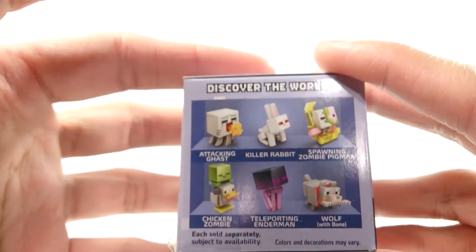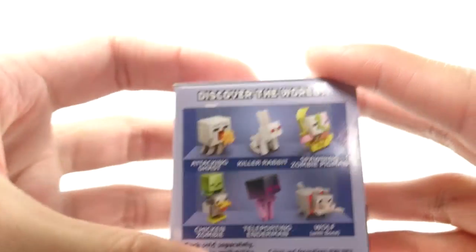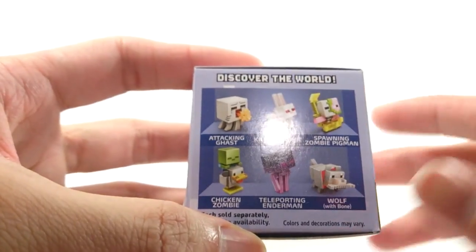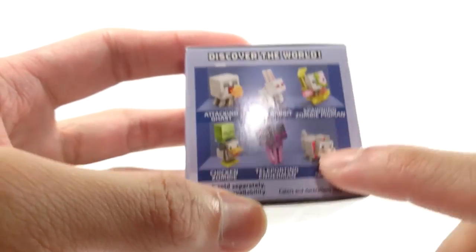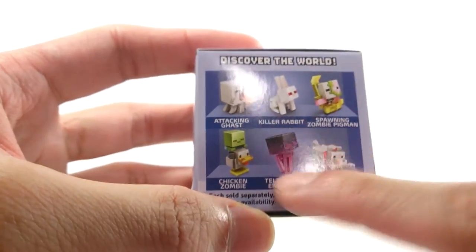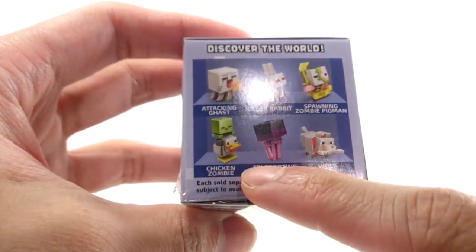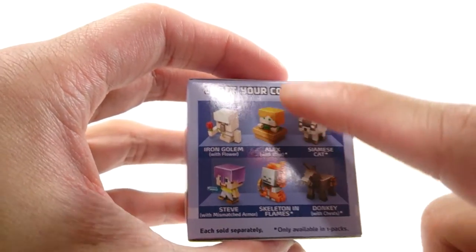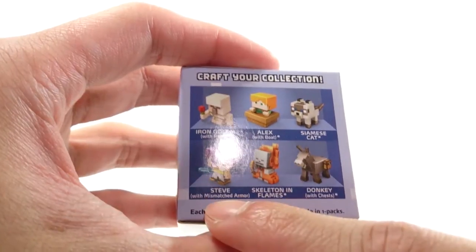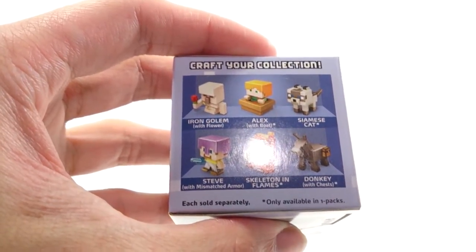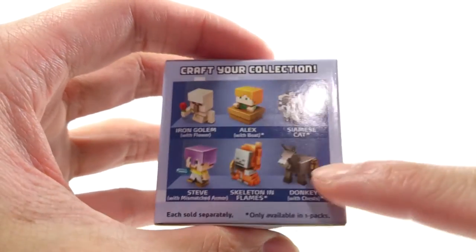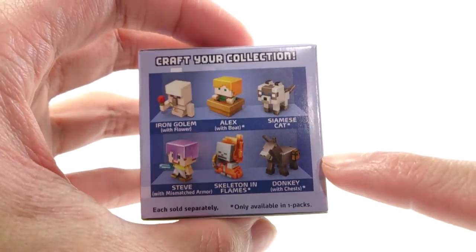They have an attacking Ghast, that's cool. Killer Rabbit, Spawning Zombie Pigman, didn't know about that. The most I've played of Minecraft is Minecraft Story Mode, so go figure. A Wolf with a Bone, Teleporting Enderman, which looks really cool. Zombie Riding a Chicken, that's cool as well. A Siamese Cat, Alex with a Boat, Iron Golem with a Flower, Steve with Mismatched Armor, Skeleton in Flames, so I guess we got a Zombie in Flames last time. And a Donkey with Chest, which looks similar to the horses that we've gotten before. Maybe the ears look different.